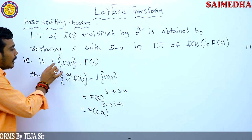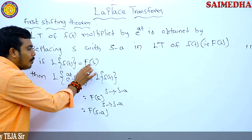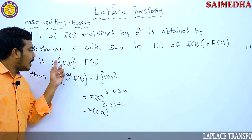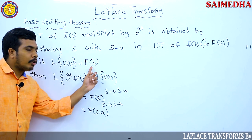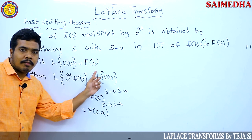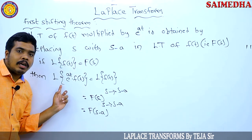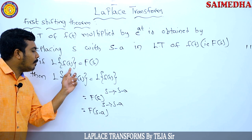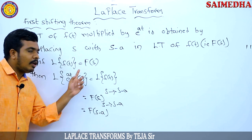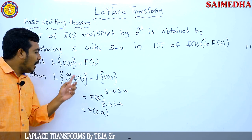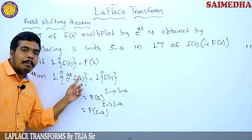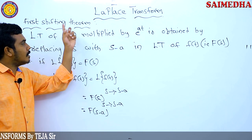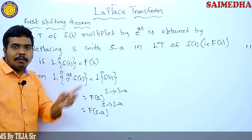If the Laplace transform of f(t) is F(s), and if we find the Laplace transform of e^(at) into f(t), we can find the transform of any function multiplied with an exponential function. By the first shifting theorem, the Laplace transform of e^(at) multiplied by f(t) is obtained.